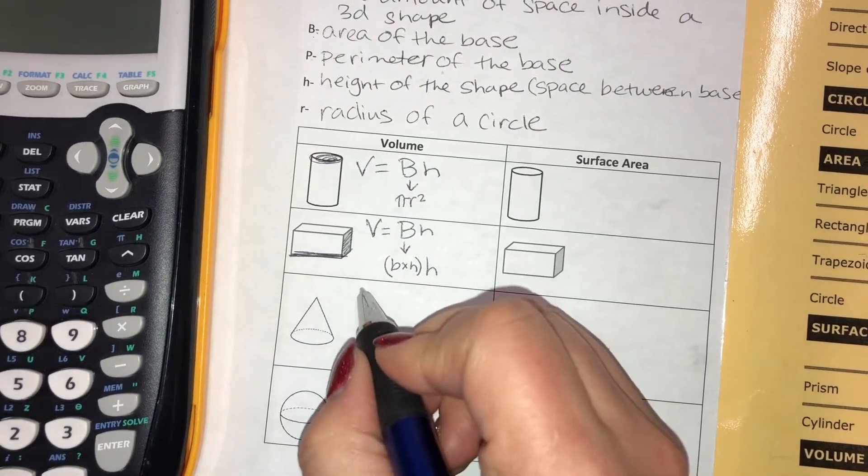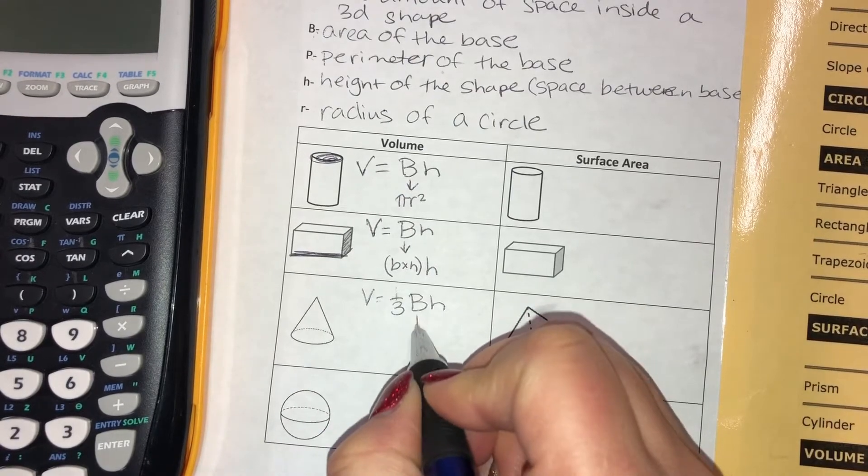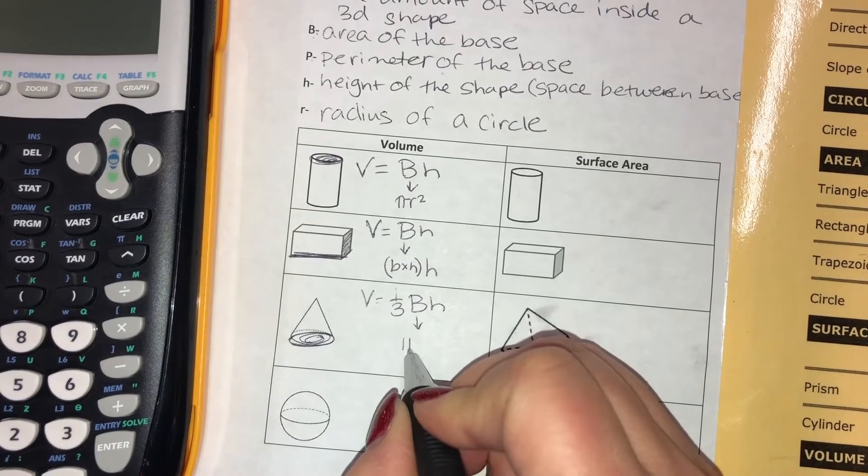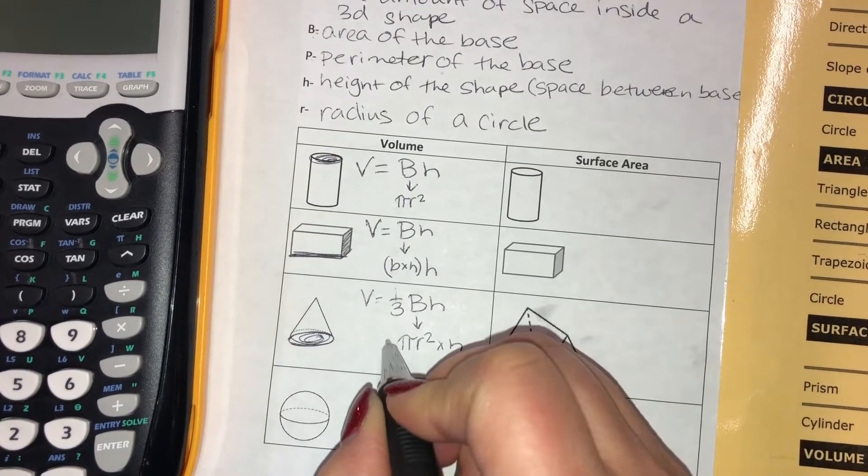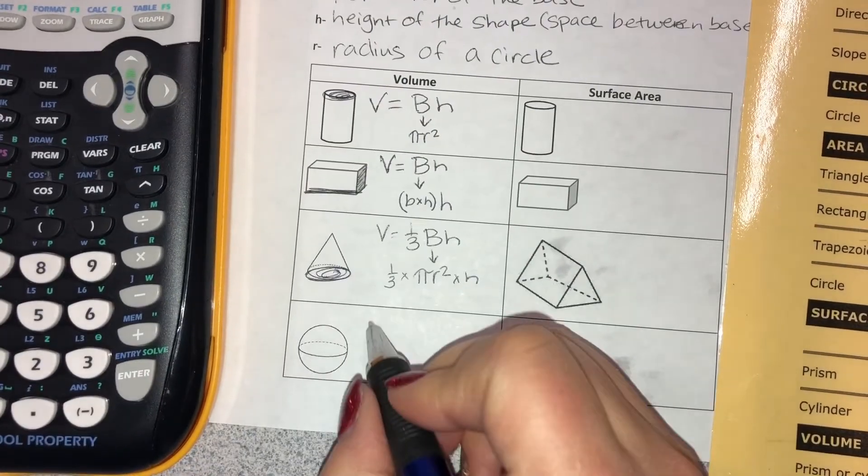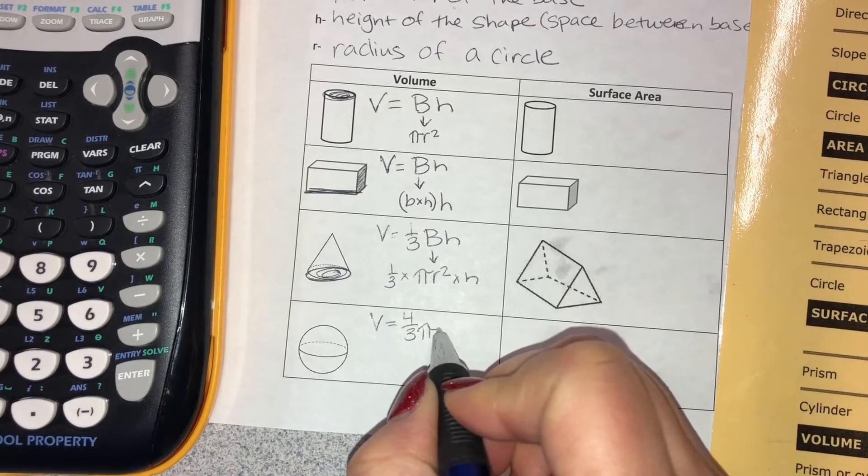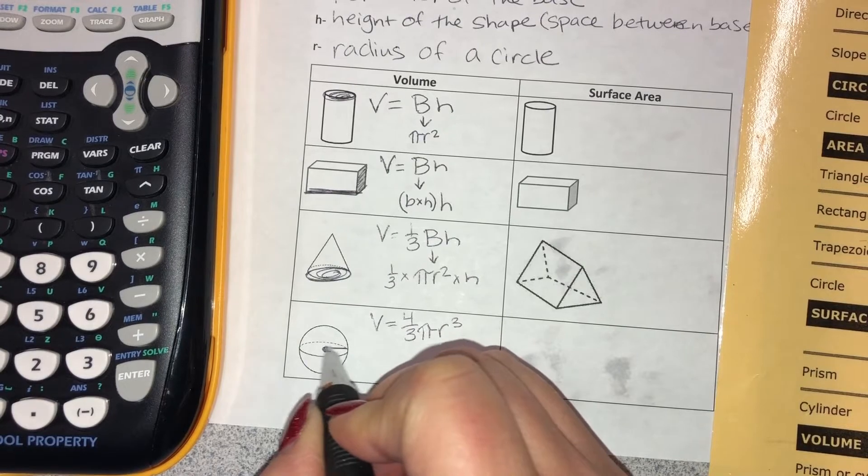Volume of a cone: V equals one third BH. Again, the base is a circle. To find the area of a circle, you do pi R squared times the height and then also times one third. And then volume of a sphere would be V equals four thirds pi R cubed. The radius is the distance from the middle to the edge.